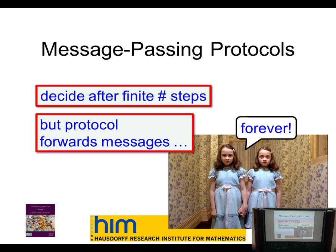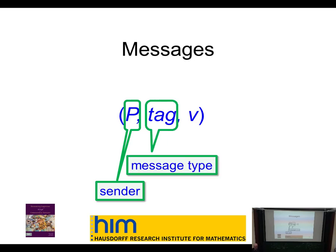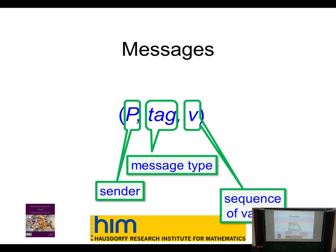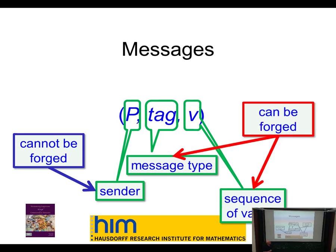Messages have a form: labeled with the sender, labeled with a tag telling you what kind of message this is, and then some sequence of values. The sender cannot be forged — these are authenticated messages. If you can forge a message, you're really in trouble. But here, one way or another, we can guarantee I can tell a message came from you — even if I don't trust you, I know it came from you. A faulty Byzantine process can make up any message type and any sequence of values.